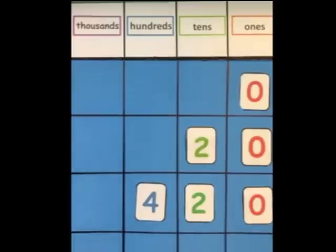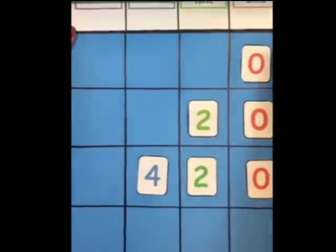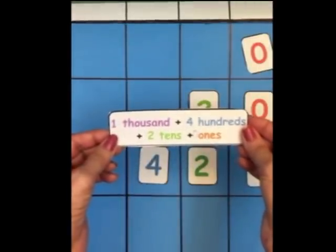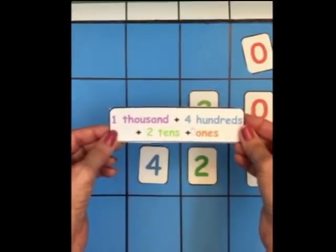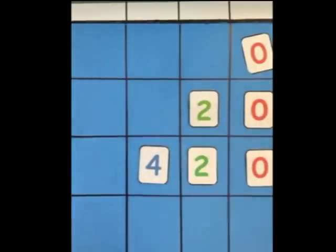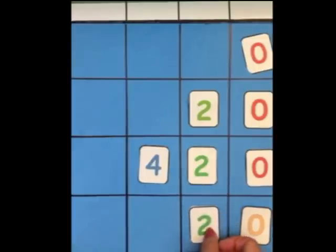Now we're going to push this up so we can get our last one in. That one is one thousand plus four hundred plus two tens plus zero ones — it has four digits and four place values. Let's build that number: here is a zero representing the ones, then two tens, then four hundreds.